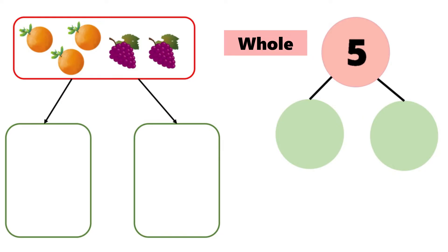Some of the fruits are oranges, some are grapes. So let's break up the whole into two parts. Oranges together, grapes together.